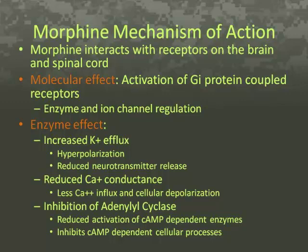Primarily, the mu receptor mediates respiratory depression and analgesia. Morphine produces analgesia and, to a lesser extent, sedation by binding and activating G-protein coupled receptors, typically the Gi subtype, resulting in enzyme and ion channel regulation. The effects of Gi protein receptor activation include increased potassium cellular efflux with resultant hyperpolarization and reduced neurotransmitter release, reduced calcium conductance decreasing depolarization and activity, and inhibition of adenylyl cyclase, which results in reduced activation of cAMP and thus inhibiting cAMP-dependent cellular processes.